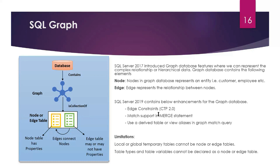Products like Google Home or Alexa use graph features to traverse nodes and retrieve data. Google Maps uses SQL Graph-like features to find cost-based or optimal routes. SQL Server 2019 contains several enhancements to the existing graph database.